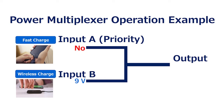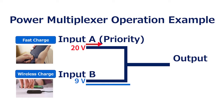Here is an example of the operation of the power multiplexer. If there is no input on the A side and 9 volts of input on the B side, then 9 volts from the B side is sent to the output. And when the input on the A side becomes 20 volts, priority is given to the A side and 20 volts is sent to the output.